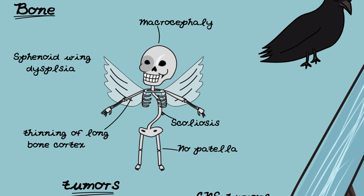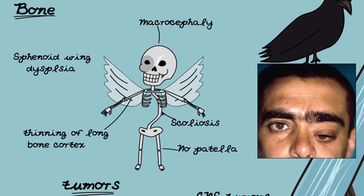We've drawn the sphenoid wing dysplasia here with wings, but obviously humans don't have wings — neither do white walkers. This is just to remind you that it is sphenoid wing dysplasia, which occurs in the sphenoid bone of the orbit. Sometimes you can get one eye socket bigger than the other.